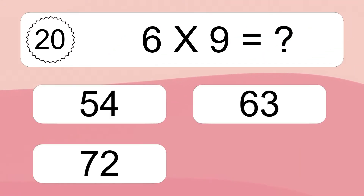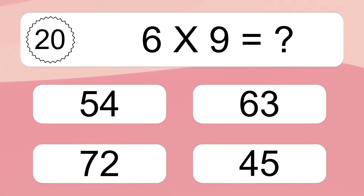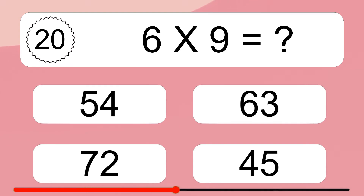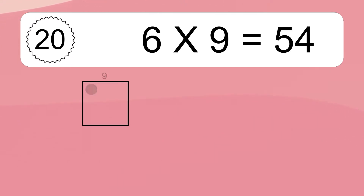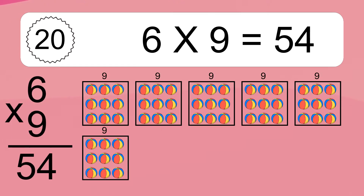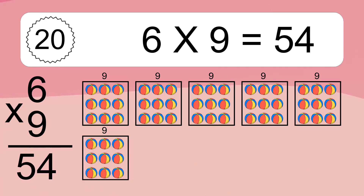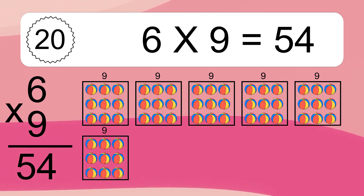6 times 9 equals 54. We have 6 boxes and each box has 9 colorful balls inside. If you count all the balls in all the boxes together, you will have 6 times 9 balls. This equals 54 balls.